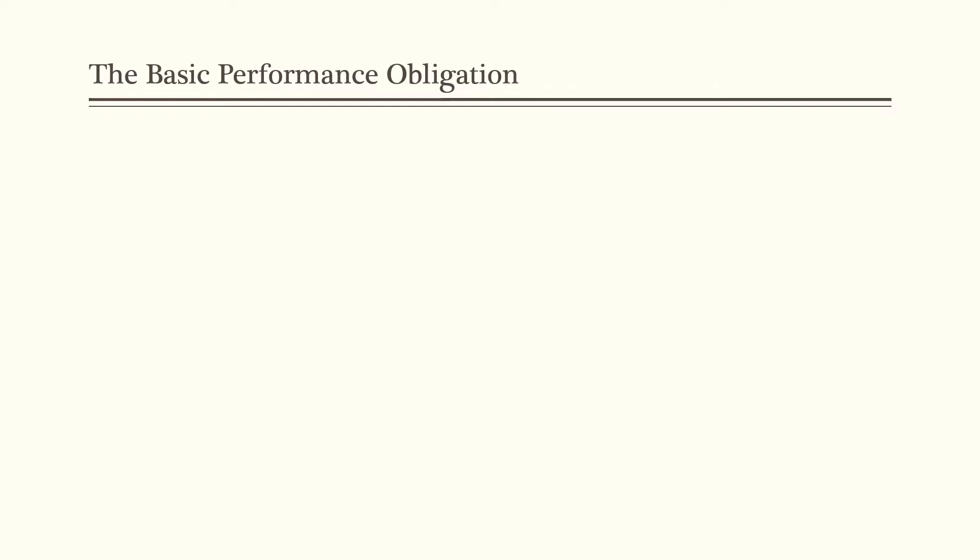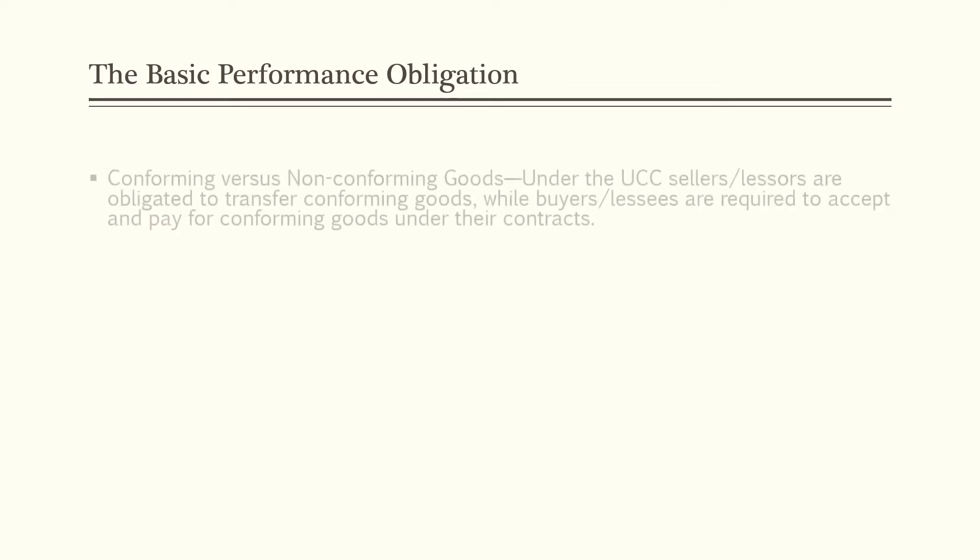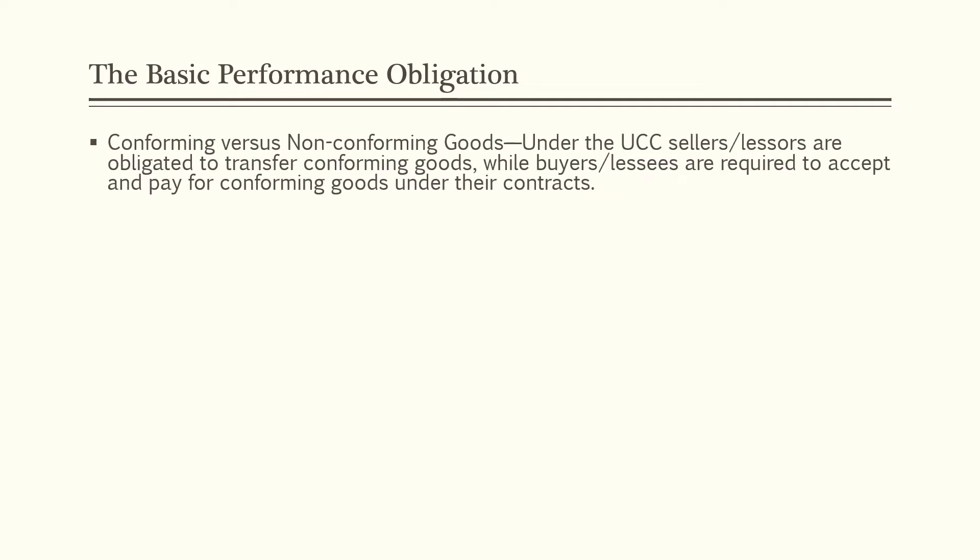We will begin with the basic performance obligations of the parties. The obligations of sellers and lessors and buyers and lessees are determined by the terms agreed to by the parties in any contract, custom in the common law, and the rules in the UCC. This lesson focuses on the rules outlined in the UCC. Under the UCC, sellers and lessors are obligated to transfer conforming goods, while buyers and lessees are required to accept and pay for conforming goods under their contracts.